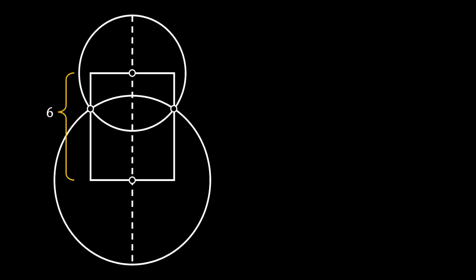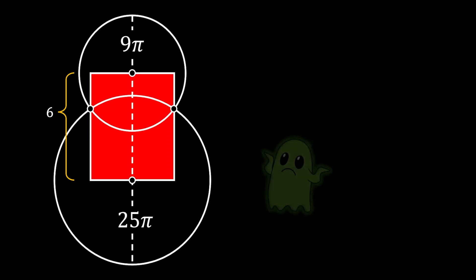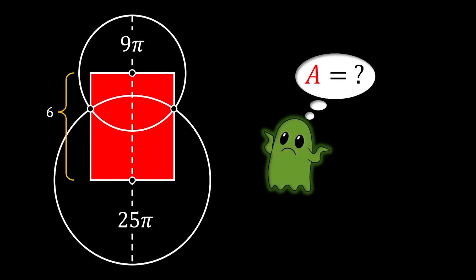The height of this rectangle is parallel to the line of symmetry. If our two circles have the area of 9π and 25π, is it possible for us to calculate this red shaded area of our rectangle? If you want to try this interesting problem for yourself, this would be a great time to pause the video and then come back and check the solution.